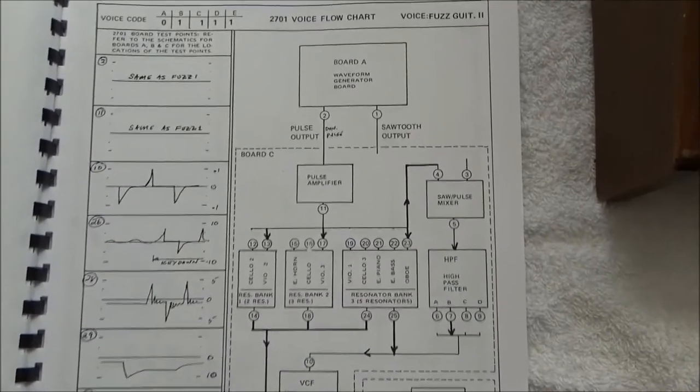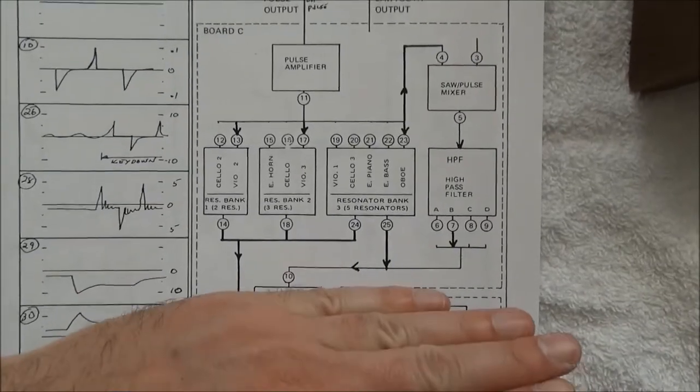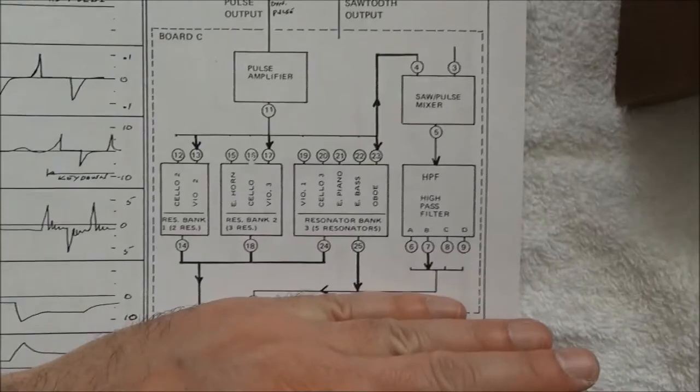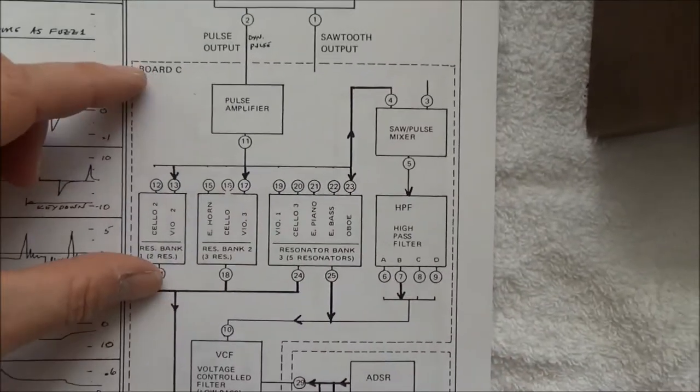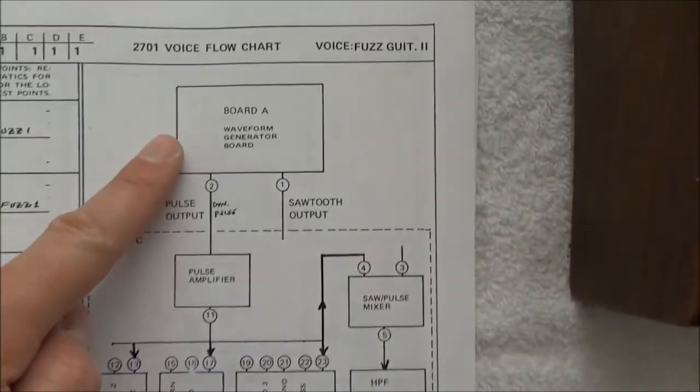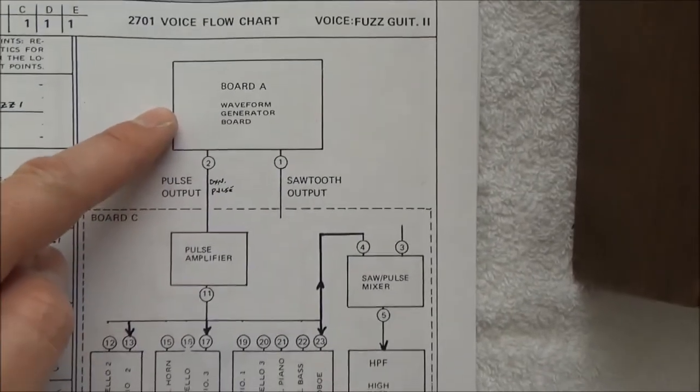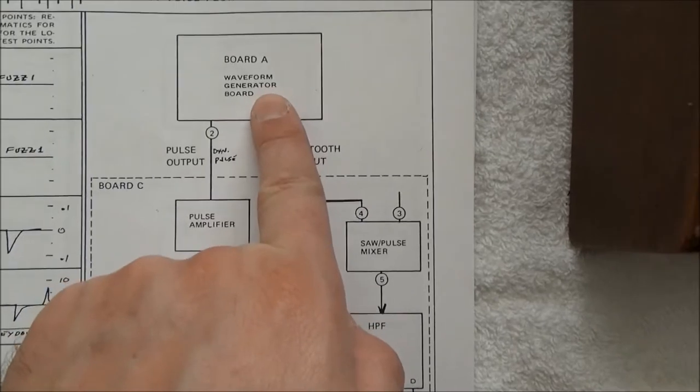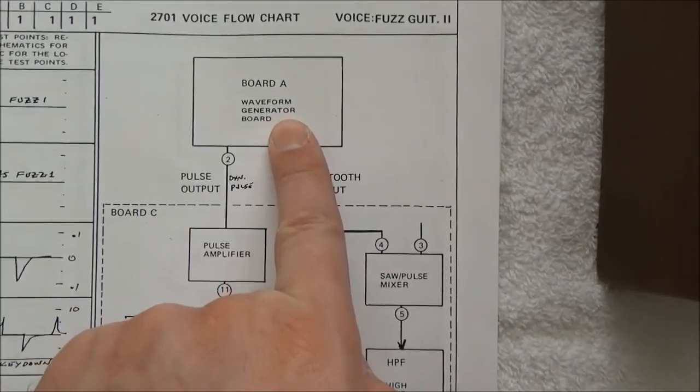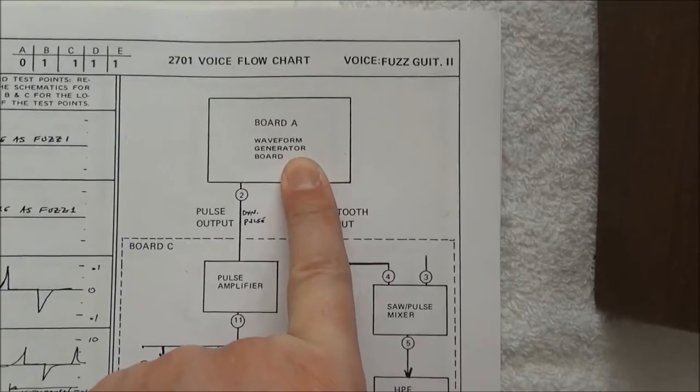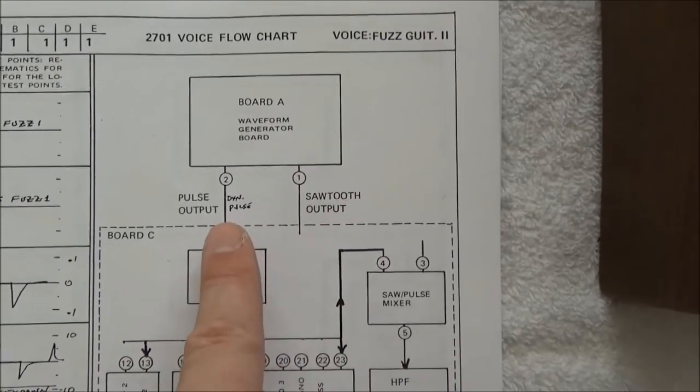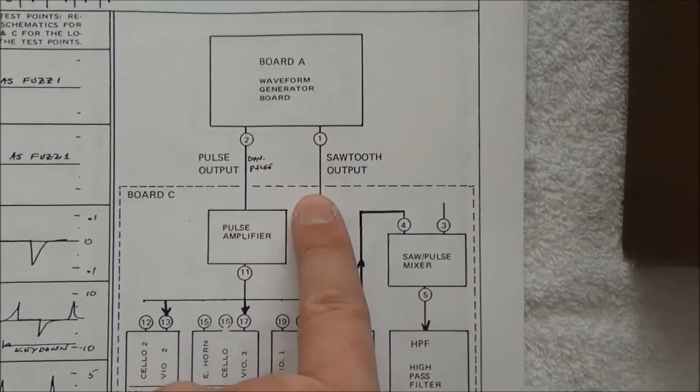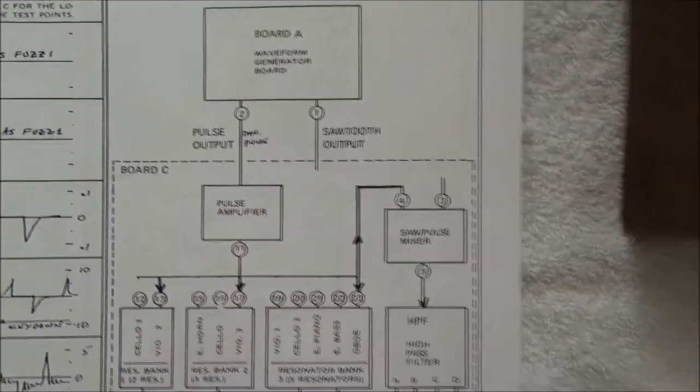Taking a look at this, we've now basically said the problem is before the voltage-controlled filter. It's either here on board C in these areas or on the waveform generator board A. I think a good place to look next is the interface between the waveform generator. They call it that instead of an oscillator since it's not a true voltage-controlled oscillator. There's two outputs to this board over to board C: the pulse output and the sawtooth output.